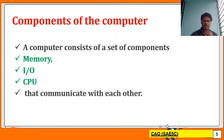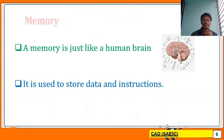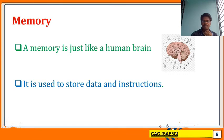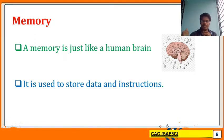First, we will briefly see the memory module. The memory module is just like a human brain. It is mainly used for storage — storage of data and instructions. We can copy data into memory or take data out of it. The main operation of the memory module is to store data and instructions.